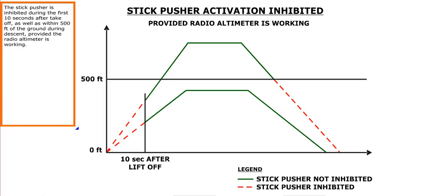The stick pusher is inhibited during the first 10 seconds after take-off, as well as within 500 feet of the ground during descent, provided the radio altimeter is working.